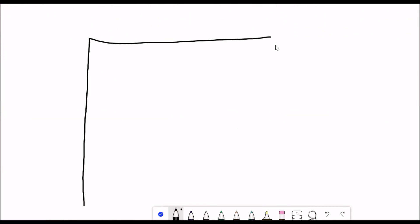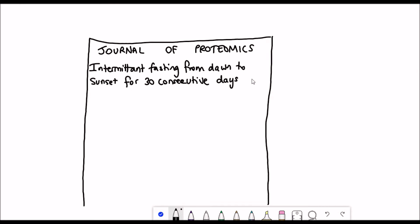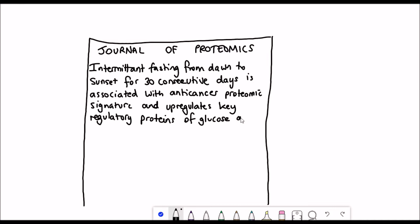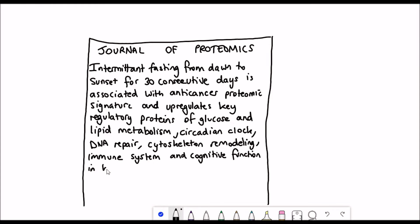These results were published in a paper that came out at the start of this year with a very long title: Intermittent fasting from dawn to sunset for 30 consecutive days is associated with anti-cancer proteomic signature and upregulates key regulatory proteins of glucose and lipid metabolism, circadian clock, DNA repair, cytoskeleton remodeling, immune system, and cognitive function in healthy subjects.